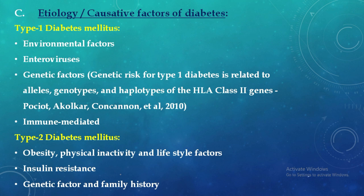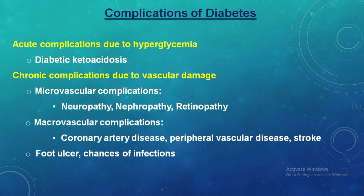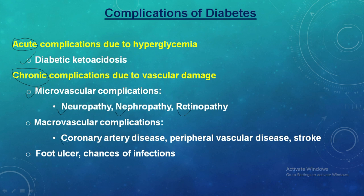Type 2 diabetes is called NIDDM where obesity, physical inactivity, lifestyle factors, insulin resistance, genetic factors, and family history are the main culprits. Major complications of diabetes include acute complications such as diabetic ketoacidosis, and chronic complications including microvascular complications like neuropathy, nephropathy, and retinopathy, as well as macrovascular complications like coronary artery disease, peripheral vascular disease, and stroke. Foot ulcers and increased risk of infection are also common chronic complications.